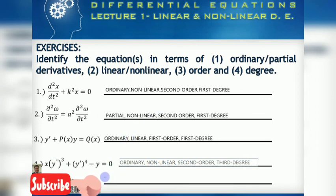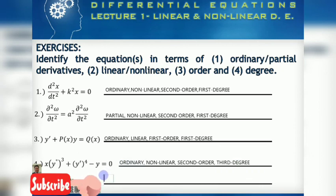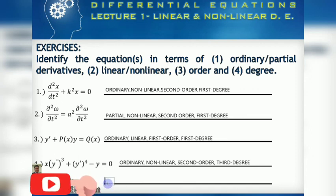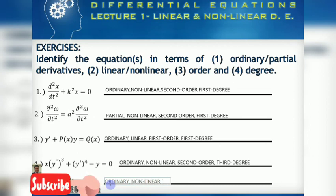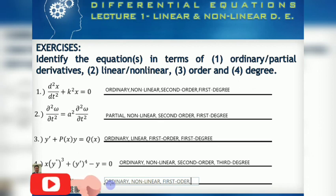Number five: a de plus b db equals zero. This is an ordinary differential equation. It is non-linear, first order, and first degree.